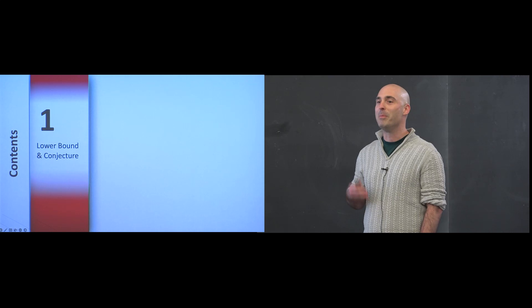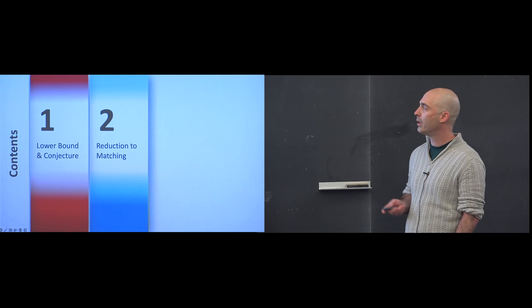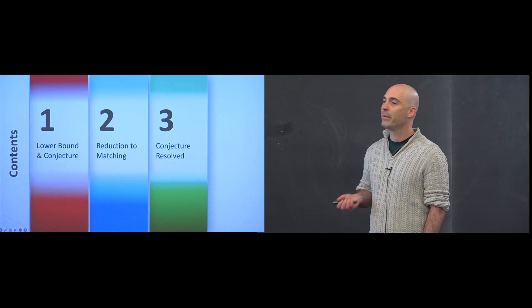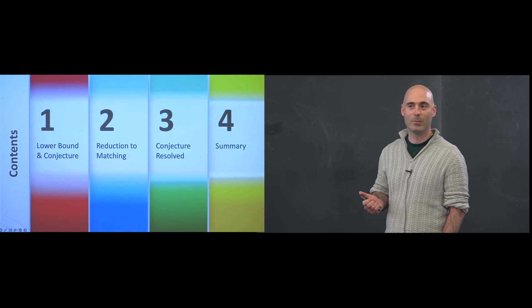The contents of the talk: we're going to start with a somewhat disheartening lower bound. Then we'll have a positive spin and see there's room to do something interesting. In the second part, we'll talk about a reduction to a specific online matching problem, which is useful to get algorithmic results. In the last technical part, we'll resolve a conjecture I'll tell you about in a minute. And like any good talk, we'll end with conclusions and open questions.